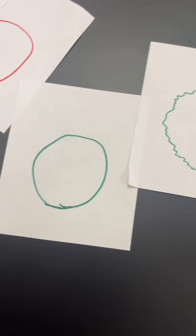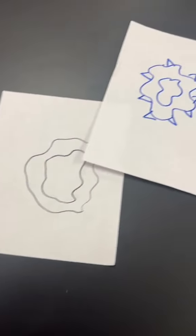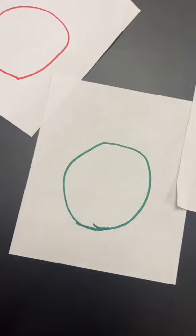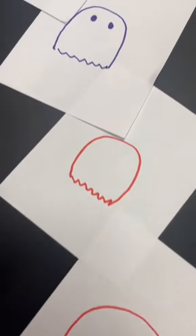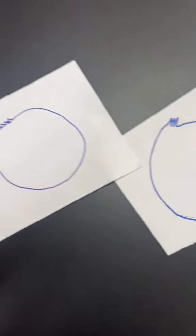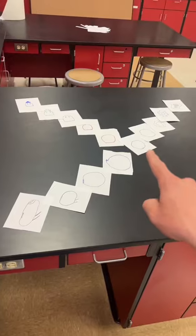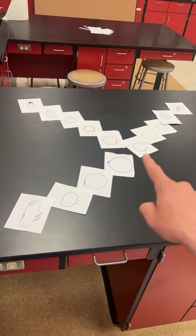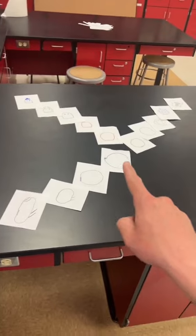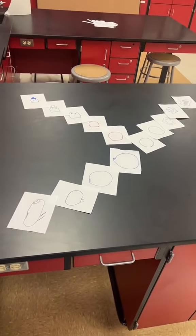Let me show you what this looks like when it's all said and done. Here's class number one and here's the end organism. Here's class number two and here's the end organism. Here's class number three and there's the end organism. Even though each class started with the same organism, they all ended with completely different looking organisms based on what they were selecting for in that class.